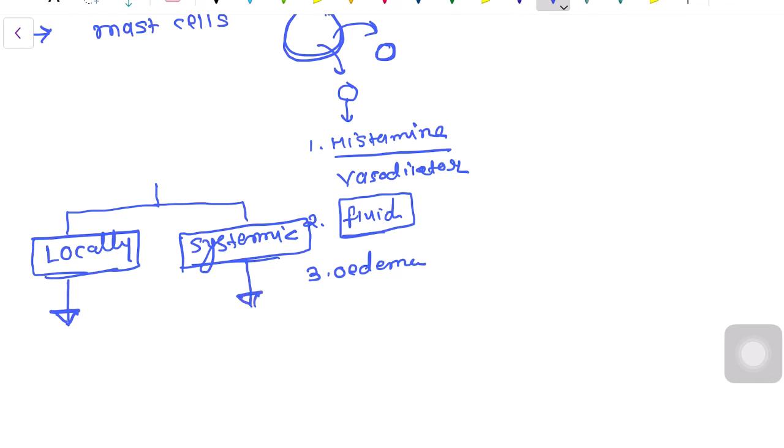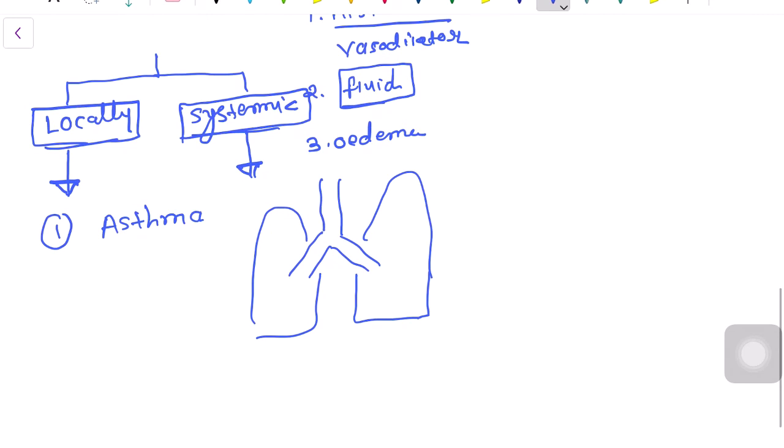You will understand through examples. First example: asthma. In our respiratory passage—trachea and bronchus—some persons are overly reactive. In their trachea and bronchus, IgE antibodies are already situated.